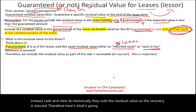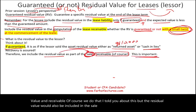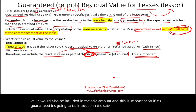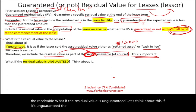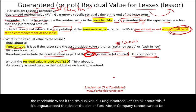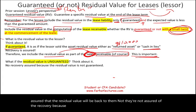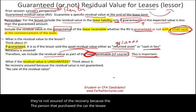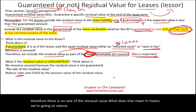Therefore, the residual value will be included in the lease receivable and also in the sale amount — this is important. If it's guaranteed, it's included in the sale amount. But if the residual value is unguaranteed, the lessor cannot be assured of recovery. The lessee doesn't guarantee anything, so there is no sale of the residual value. That means we reduce both sales and cost of goods sold by the present value of the residual value.